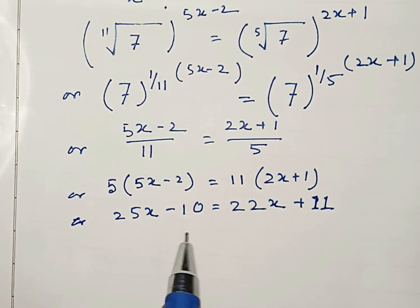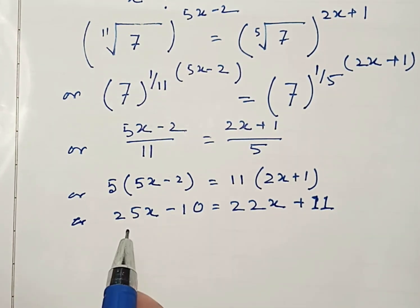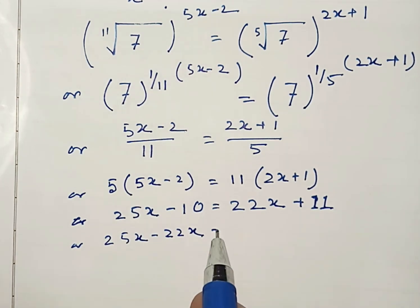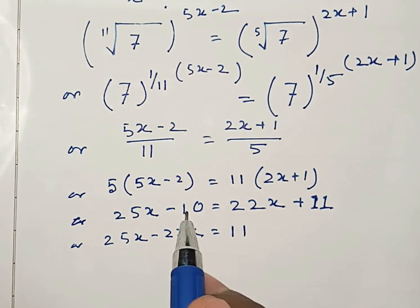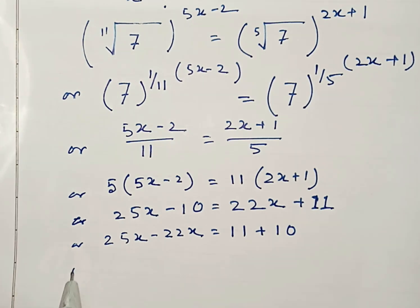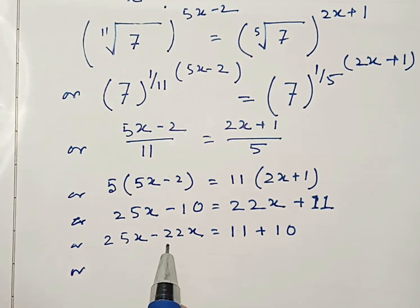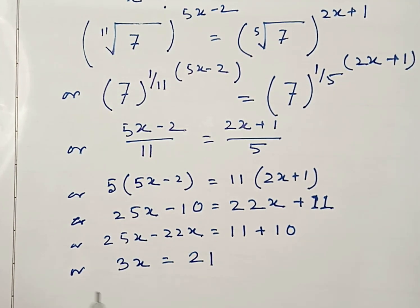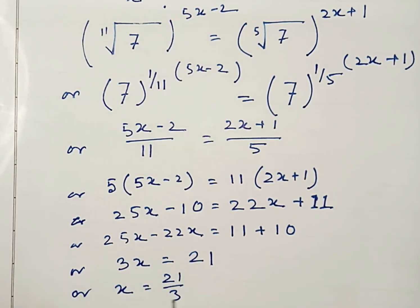Now take 22x to the left side, and 10 to the right side. So we get 25x minus 22x equals 11 plus 10. That is 3x equals 21, so x equals 21 by 3, which equals 7.